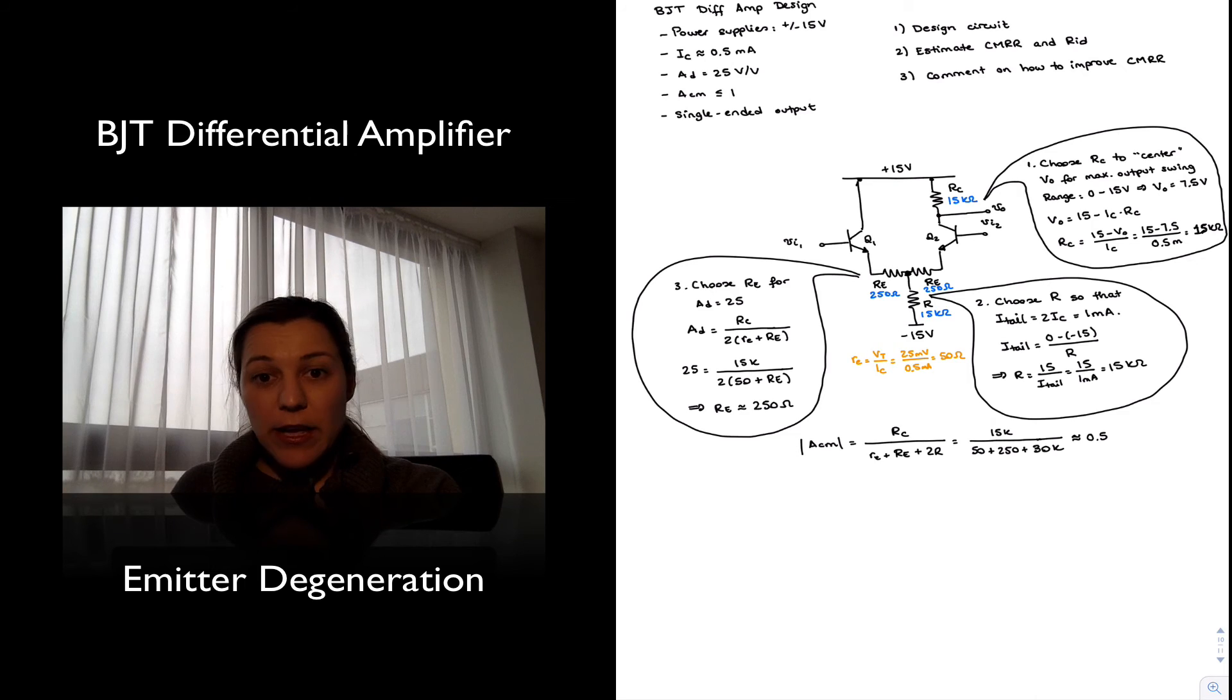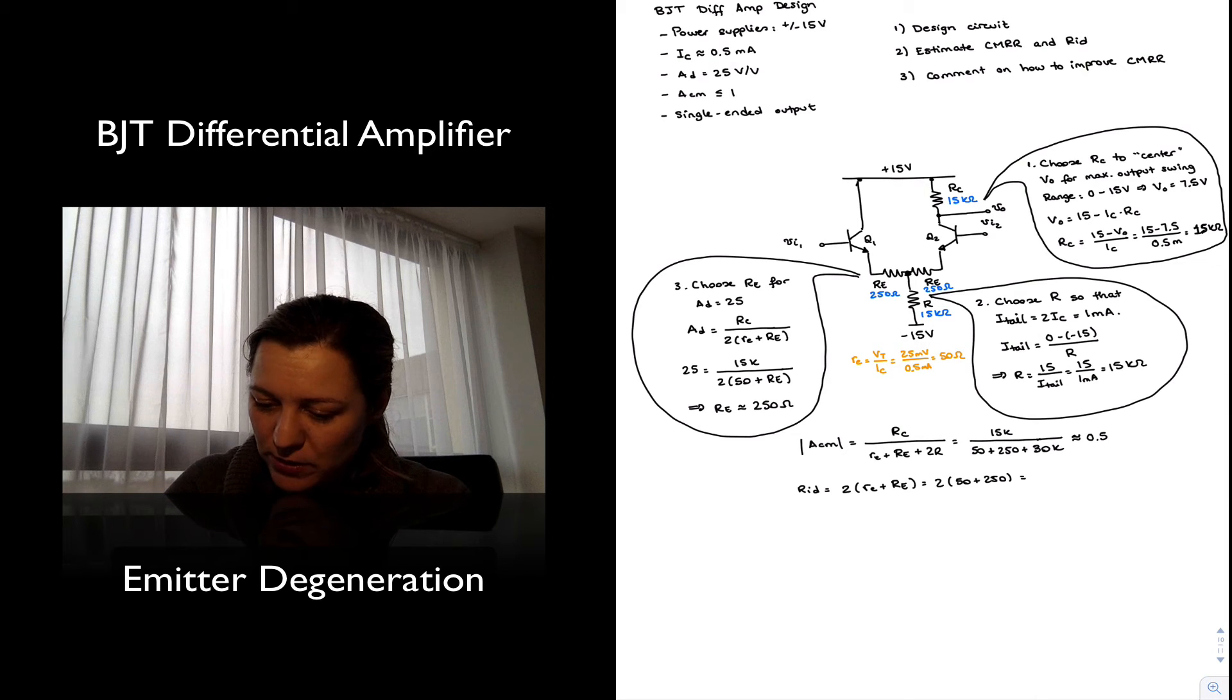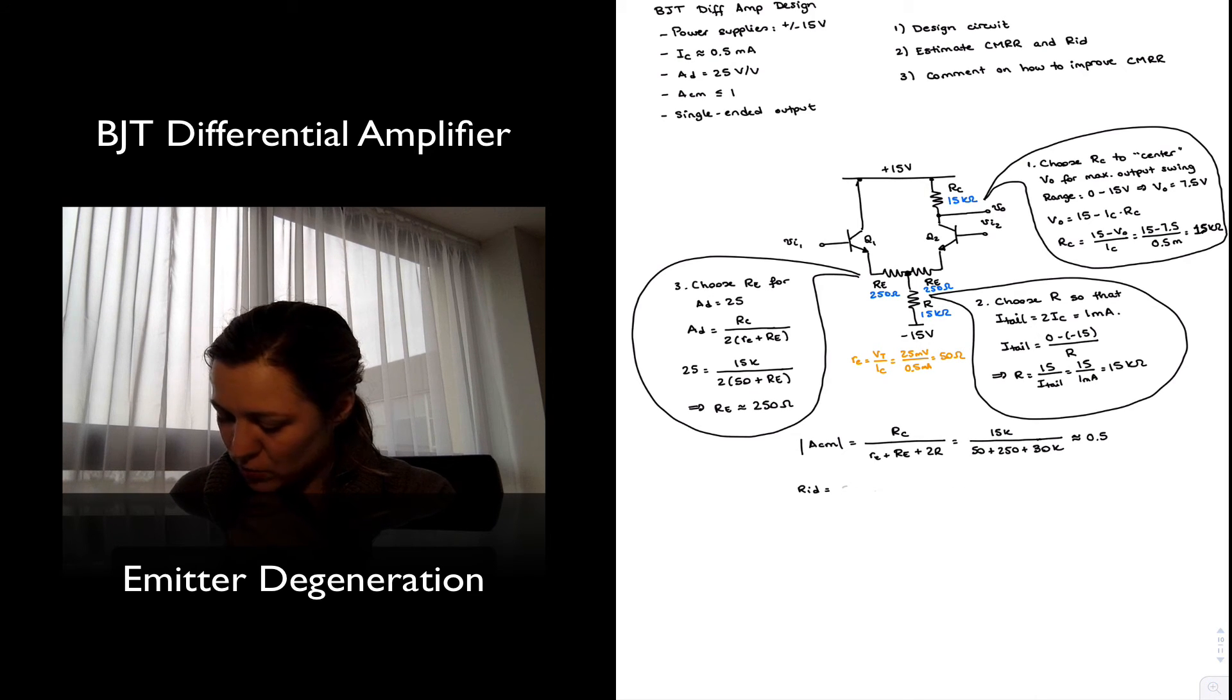All right, so we need to calculate CMRR and the differential input resistance. The differential input resistance is going to be equal to 2 beta times little re plus capital RE. So it will be 200 times 50 plus 250, which is 60 kilo ohms.